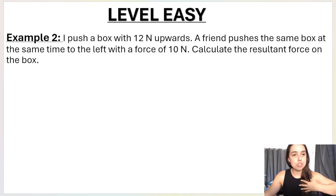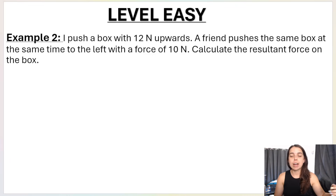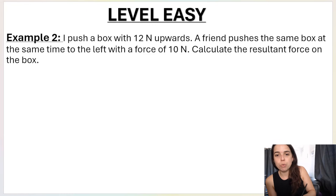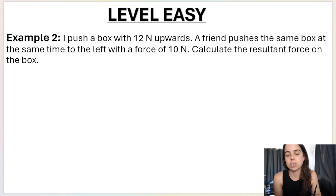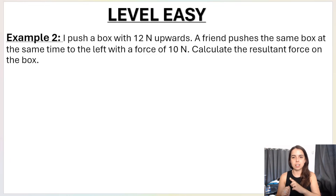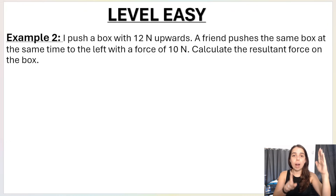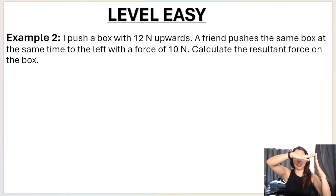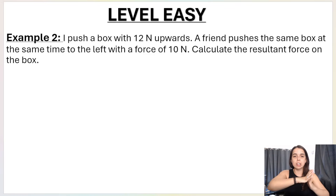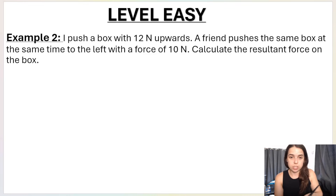Example two: I push a box with 12 newtons upwards, and a friend pushes the same box at the same time to the left with a force of 10 newtons. This is level easy because we give you one vector going in the up-down direction and one vector going in the left-right direction, so you can draw your right angle triangle immediately.